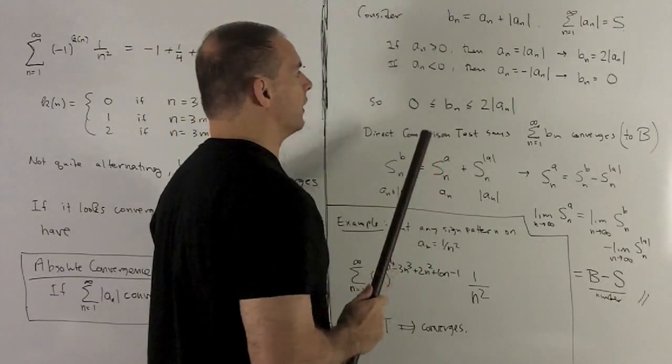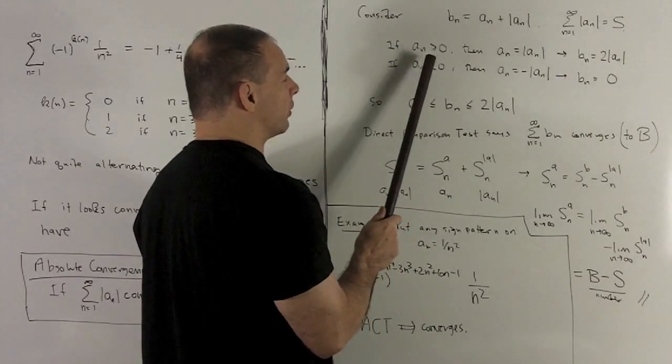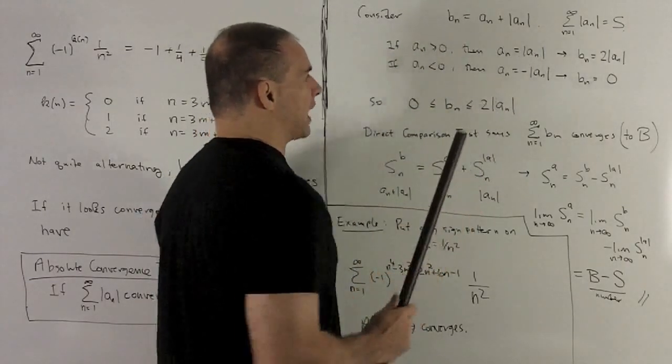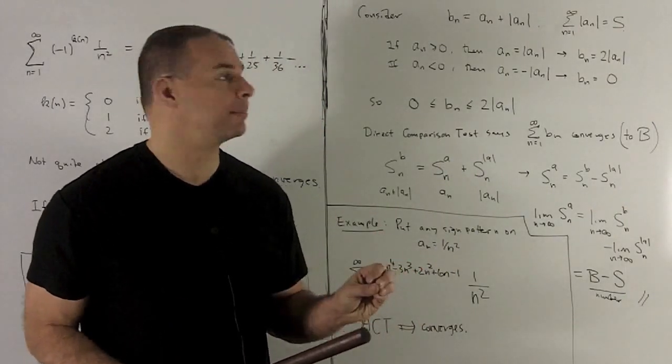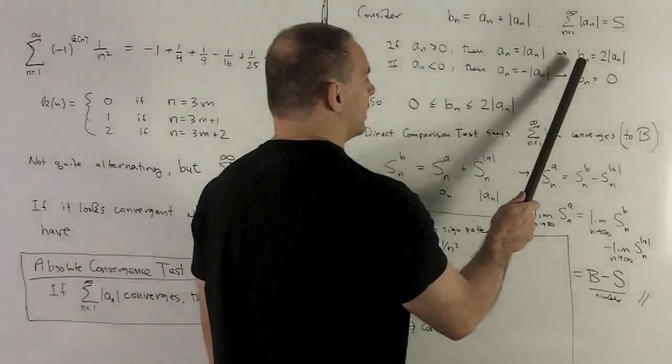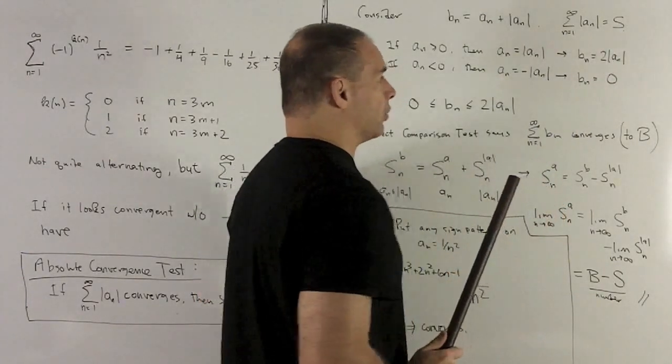Getting back to b sub n, let's note some things. If a sub n is positive or equal to zero, then it's just going to be equal to its absolute value. Absolute value says if there's a sign, throw it away. So in this case, b sub n is just going to be equal to twice absolute value of a sub n.